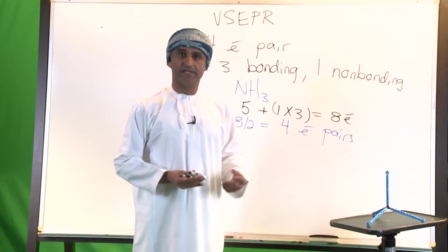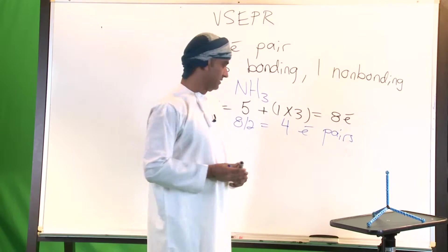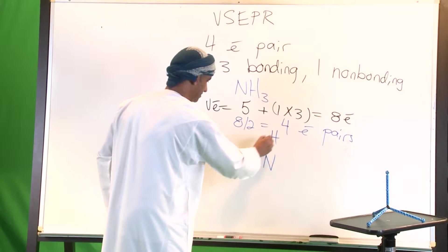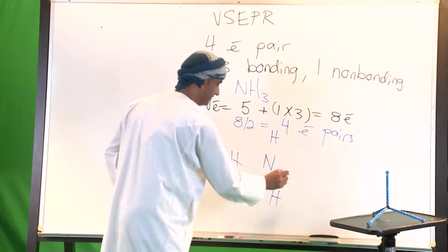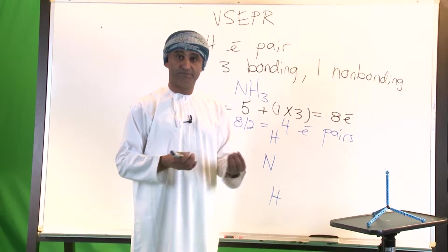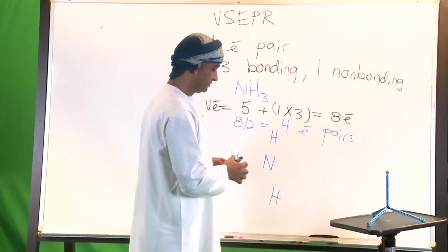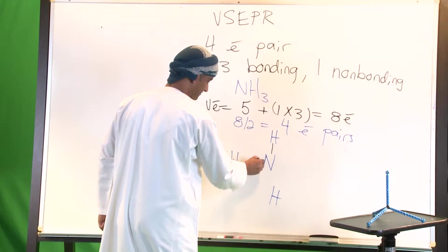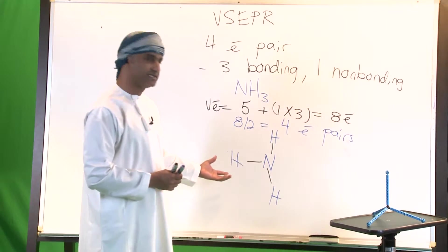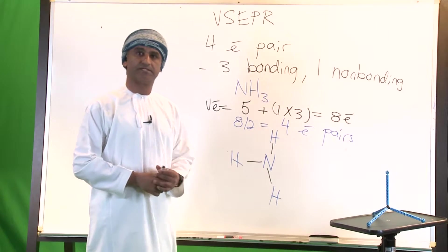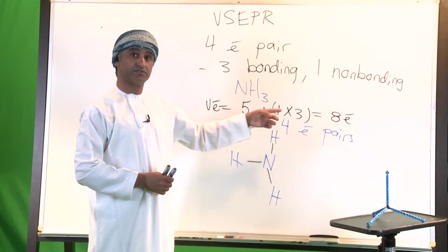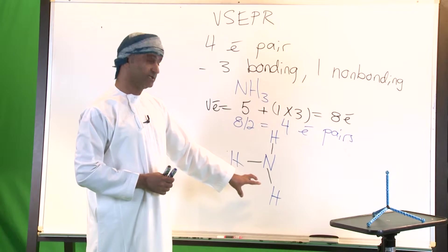To draw a Lewis structure, we start with the central atom, nitrogen, then place the surrounding hydrogen atoms — one, two, and three. The next step is to draw a bond between the central atom and each surrounding hydrogen. Counting the valence electrons used so far gives six, but we had eight, so we have two more to place.